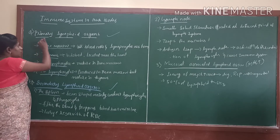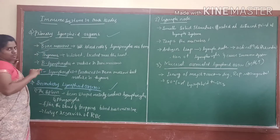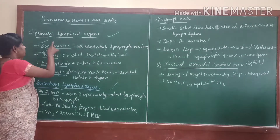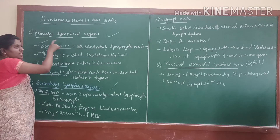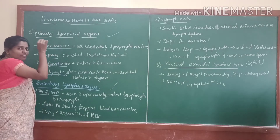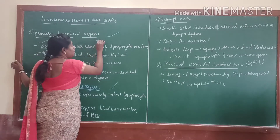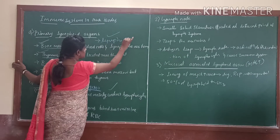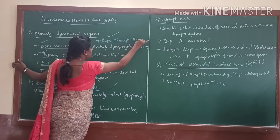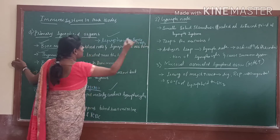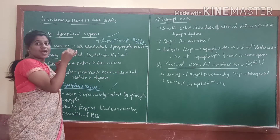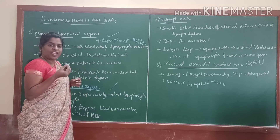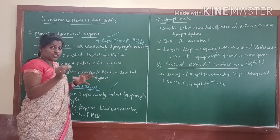The first one is the bone marrow and thymus. In bone marrow, mainly the primary lymphocytes are produced — mainly which produces the main lymphocytes. Those lymphocytes are nothing but B cells and T cells. These are the main components which are responsible for production of antibody and antigens.